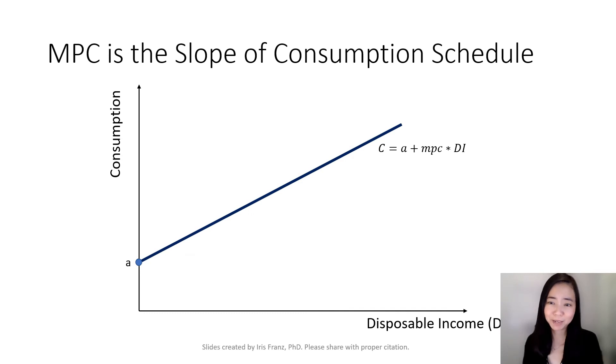And lo and behold, your consumption schedule has a formula. The capital C, your total consumption, is equal to autonomous consumption A plus MPC times disposable income. And the slope of this curve is exactly MPC.